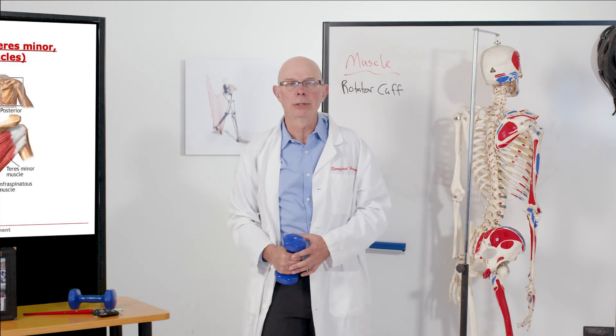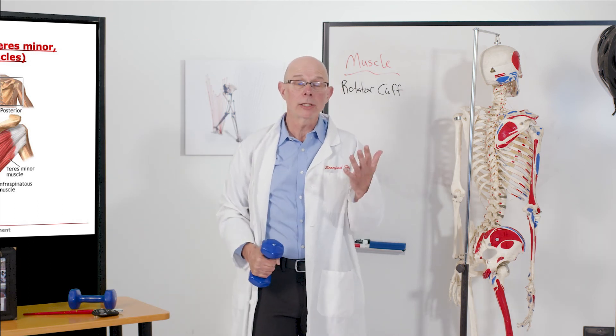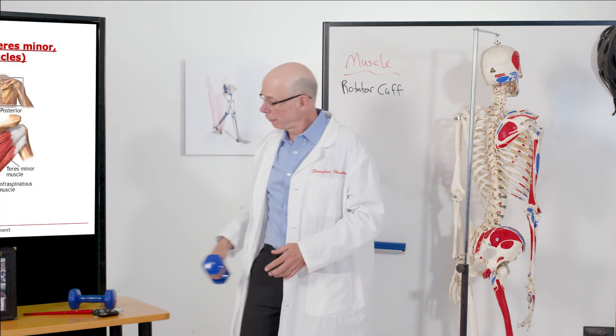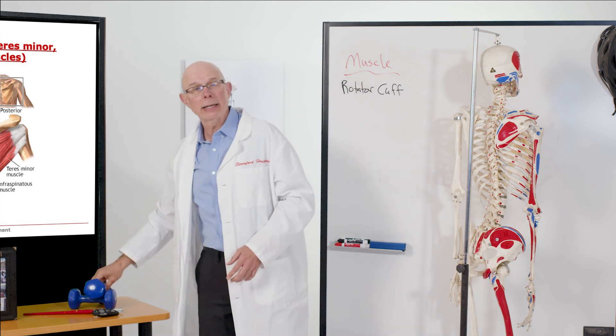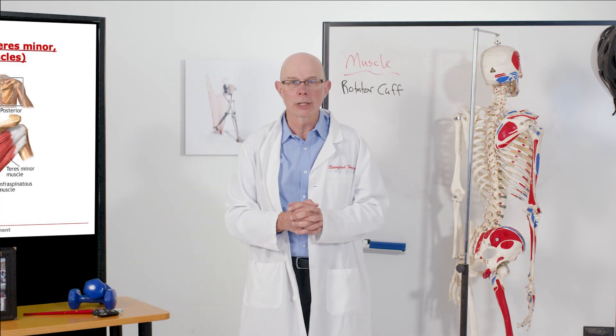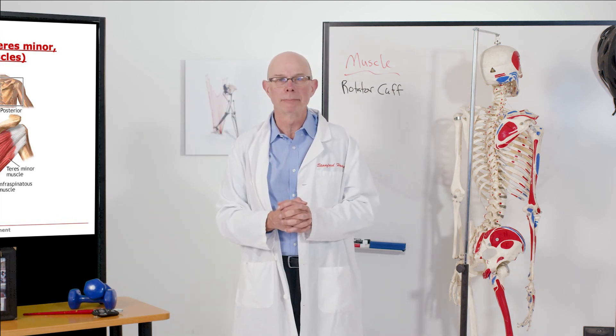So they're called the rotator cuff because they produce internal and external rotation, in addition to adduction and abduction. That's the rotator cuff — hopefully that gives you a good overview, and we'll see more of these muscles as we go forward.